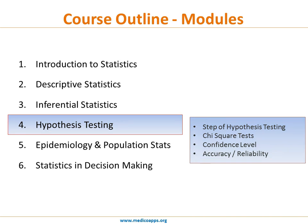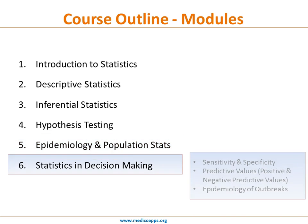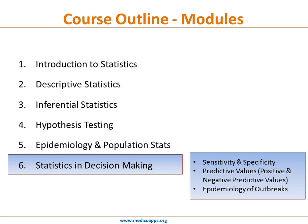The fifth module is the application of statistics in epidemiology and population dynamics. Concepts related to birth and death rates, mortality indicators, morbidity indicators, incidence, prevalence, relative risk, attributable risk, and odds ratio — all concepts commonly used in describing epidemiology and population statistics.